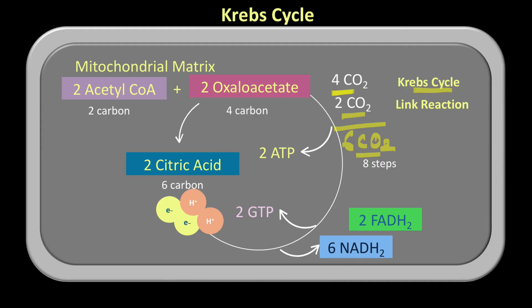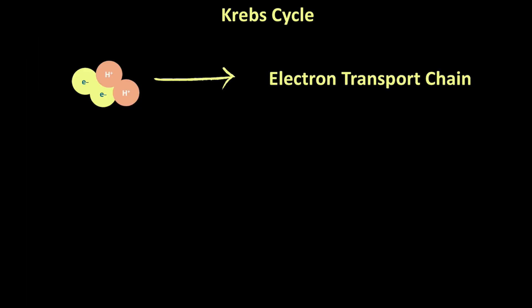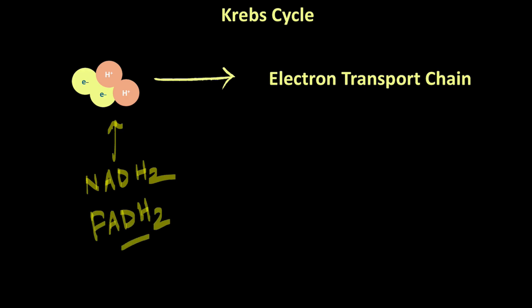The only thing left to do is to transfer all of these electrons and hydrogens — carried in the form of NADH2 and FADH2 — into the electron transport chain. Through the electron transport chain, these electrons and hydrogens will move through different complexes and enzymes to produce ATP.